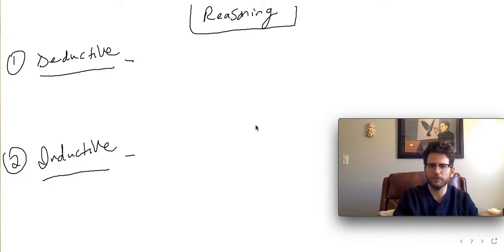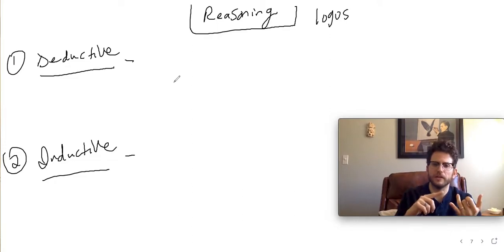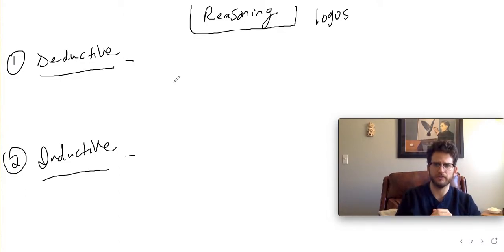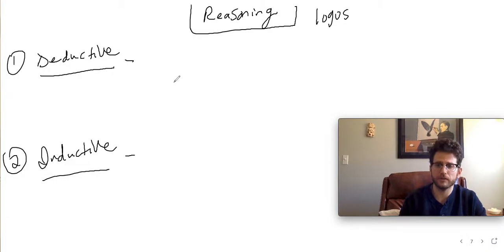What really convinces in the long term is logic — logic and reasoning. We call that third kind of persuasion logos. Logos includes reasoning, which we'll break down further into deductive and inductive, as well as facts and statistics, expert testimony — all of these things. We want to use good, strong reasoning in our writing because that's what's going to convince our reader in the long term.